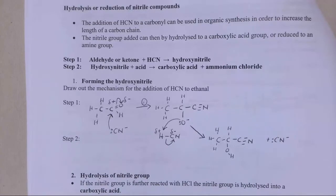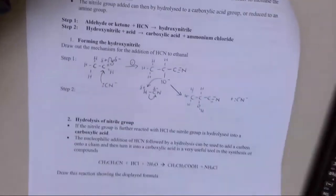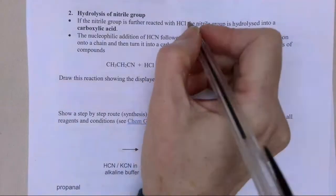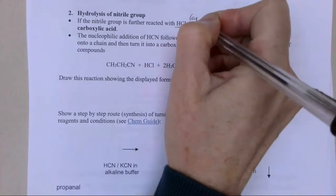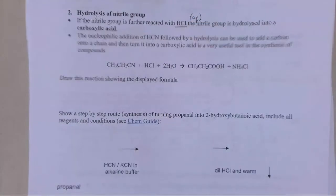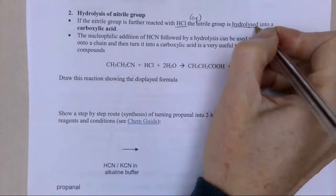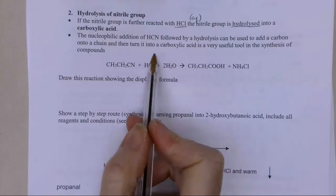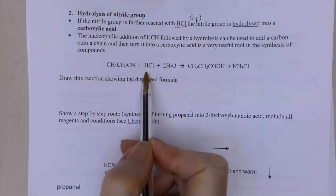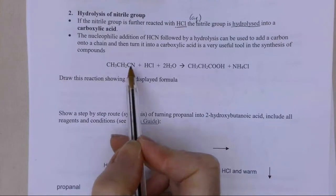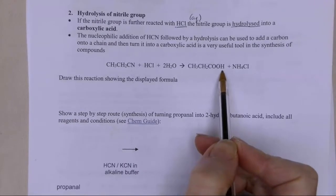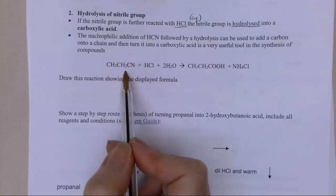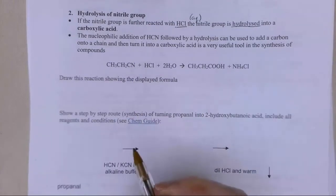Now we've got that, I can do something quite interesting with it. Now I've got the nitrile group, I can react it further with HCl in water. It's important this is dilute hydrochloric acid, because I'm doing hydrolysis - using water in my reaction. This works for any cyanides. This one is just a straight cyanide, not a hydroxy cyanide, but it works with pretty much any of the cyanide groups.